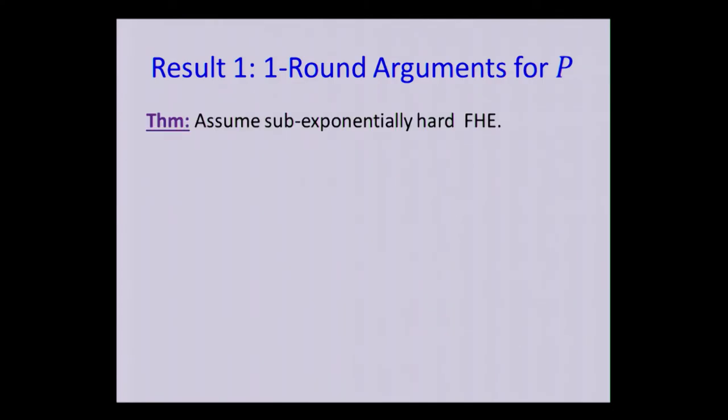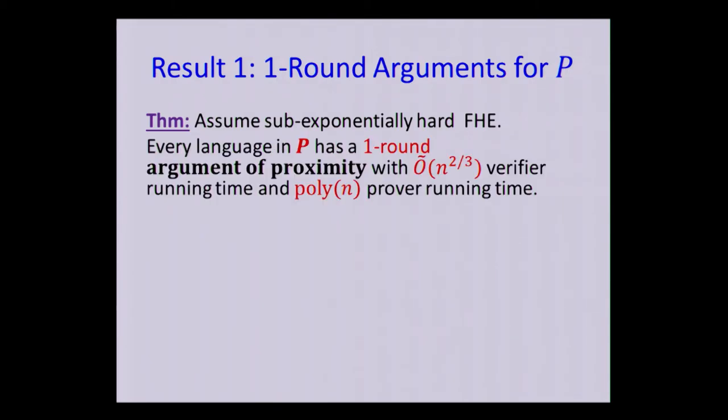Okay, so the cryptographic assumption that we're going to assume is sub-exponentially hard fully homomorphic encryption, which I guess is a relatively mild assumption nowadays. And what we obtain is the following, that every language in P has just a one-round argument of proximity where the query complexity, communication complexity, and verifier running time are all sublinear. Specifically, they're n to the two-thirds, and the prover runs in polynomial time.